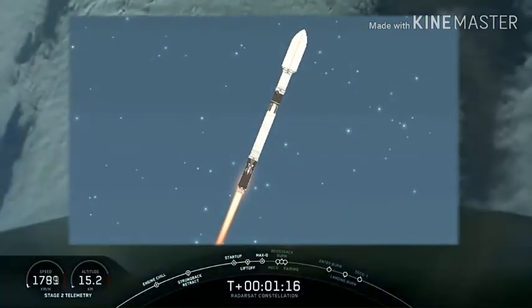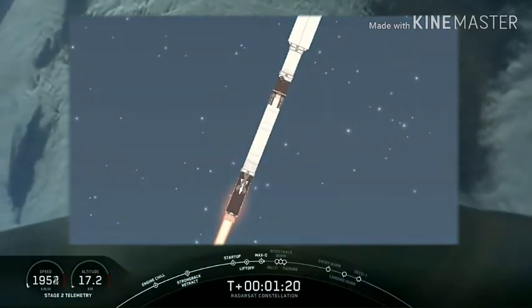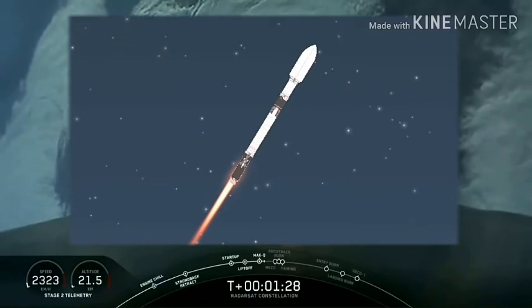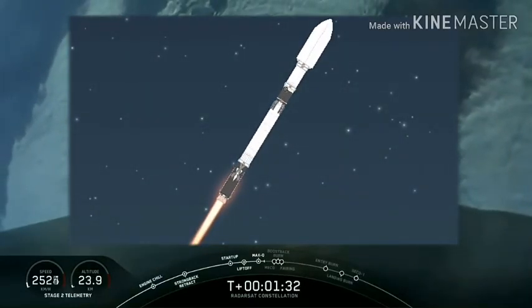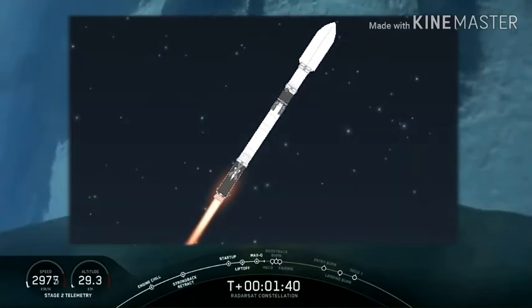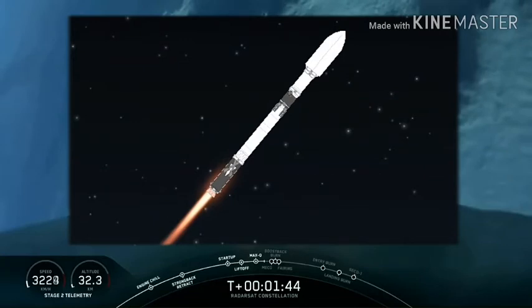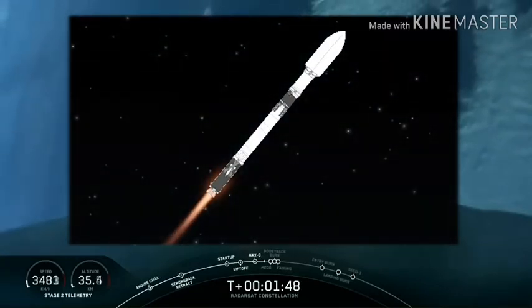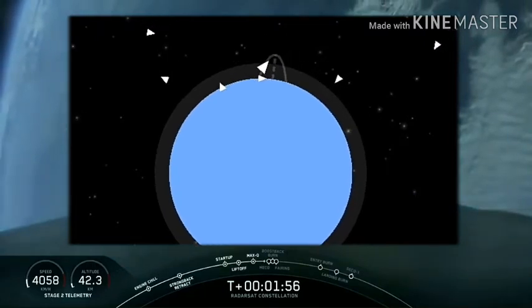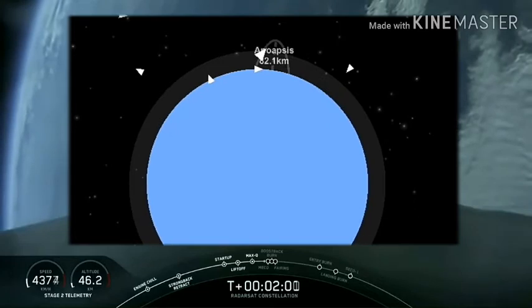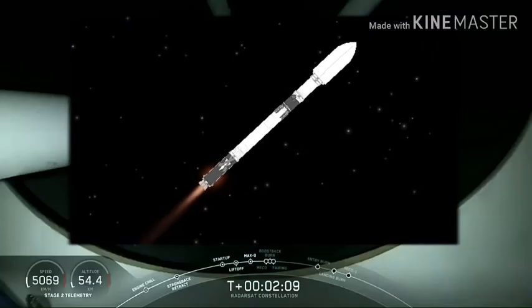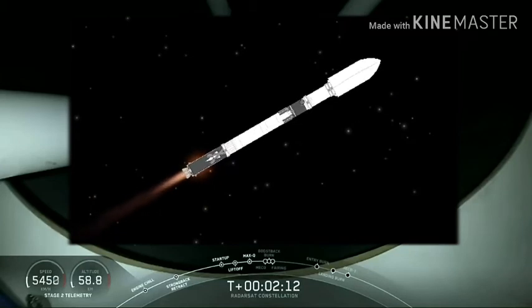We now have three events coming up in rapid succession: main engine cutoff, stage separation, and second engine start one, or SES-1. All of these things you can follow along with on the timeline at the bottom of your screen. Main engine cutoff coming up soon. This is where all nine engines of F9 will shut down. Trajectory is looking good.